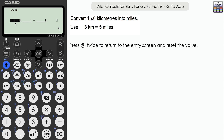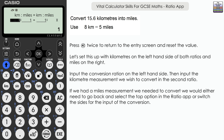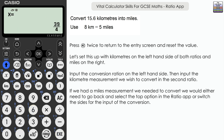The next question is a conversion between kilometres and miles. We just want to double-check the ratio is the correct way around. We have kilometres in both the conversion — 8 kilometres to 5 miles — and the amount of 15.6 kilometres, so we'll have kilometres on the left-hand side. We input 8 kilometres to 5 miles, then 15.6 on the left. Press Execute twice. The answer appears as a fraction: 39 over 4. Go to Format then Decimal for the decimal answer: 9.75 miles.